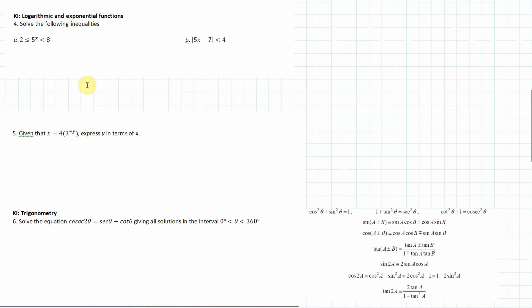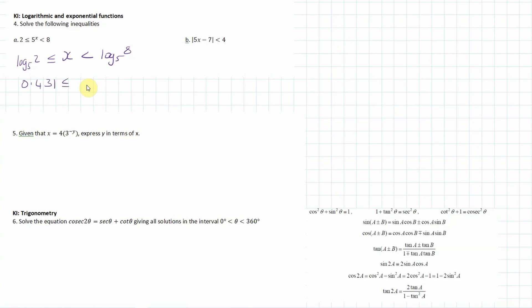Moving on to logs and exponential functions — I need to solve this inequality. I'm going to take log base 5 of everything: log base 5 of 2 is less than or equal to x is less than log base 5 of 8. You can put that in your calculator and round to three significant figures: 0.431 is less than or equal to x is less than 1.29.